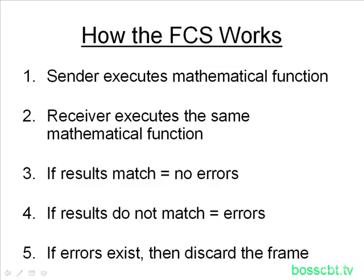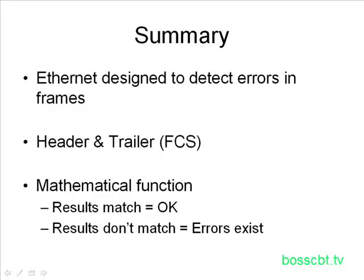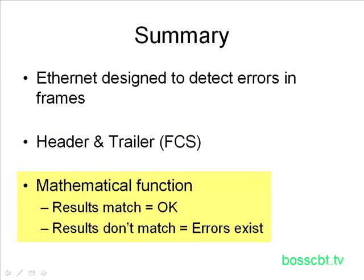That pretty much sums up how FCS and Ethernet error detection works. To summarize: Ethernet is designed to detect errors in frames, and when it does detect an error, it simply discards the frame. We looked at the header and trailer of an Ethernet frame and know the FCS field — which lives in the trailer — is what performs error detection. A mathematical function is run by both the sender and receiver; if the results match, the frame is good. If they do not match, errors exist and Ethernet discards the frame. That is Ethernet error detection — thanks for watching.